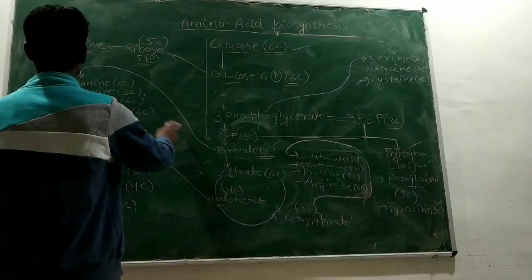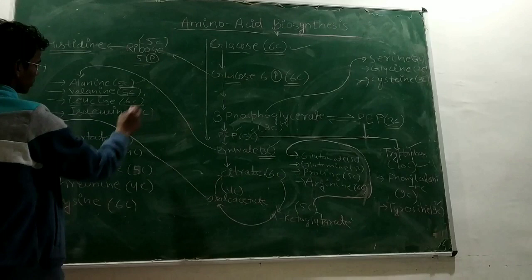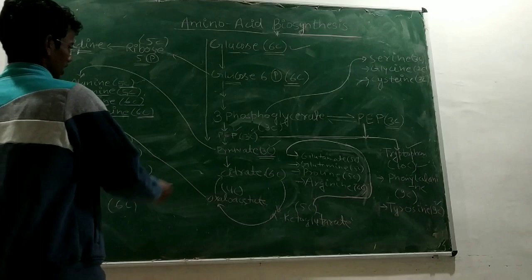Let's look at the amino acids. Alanine has 5 carbons, valine has 5 carbons, leucine has 6 carbons, and isoleucine has 6 carbons. Pyruvate becomes these amino acids.